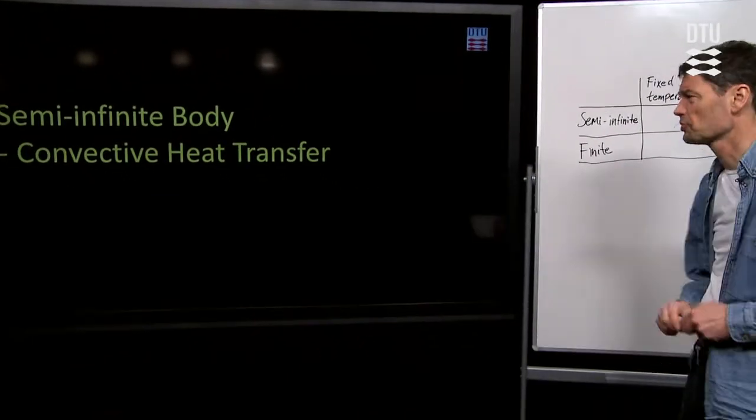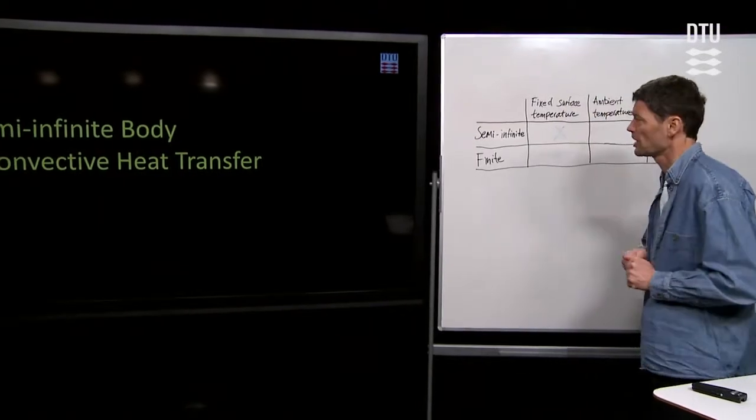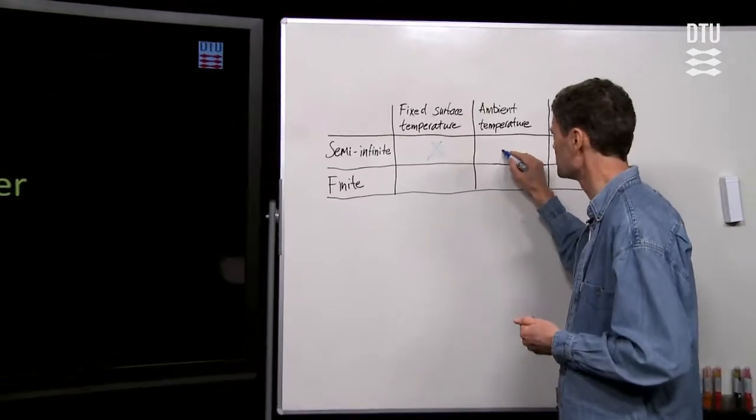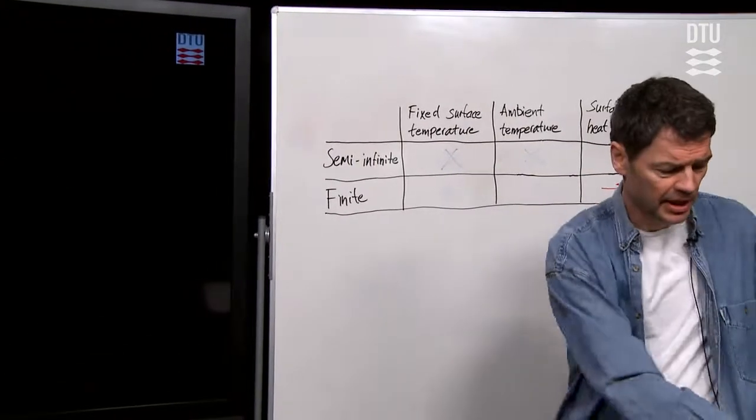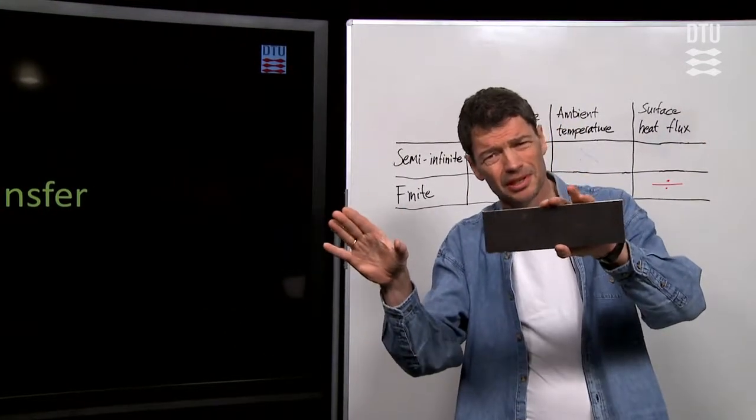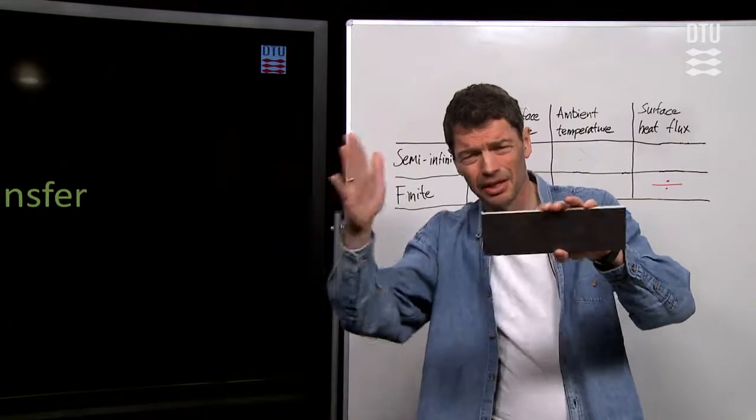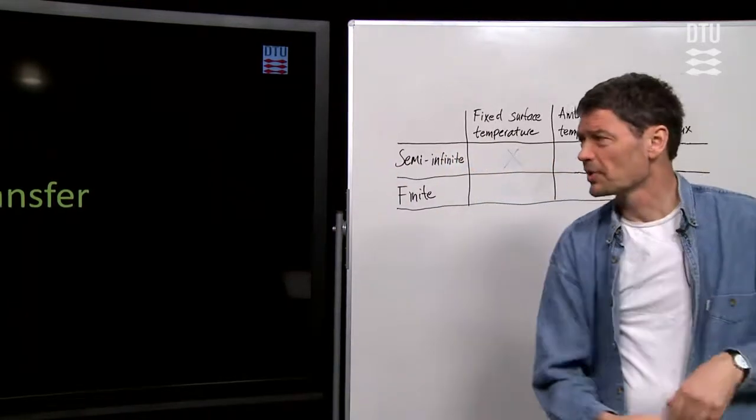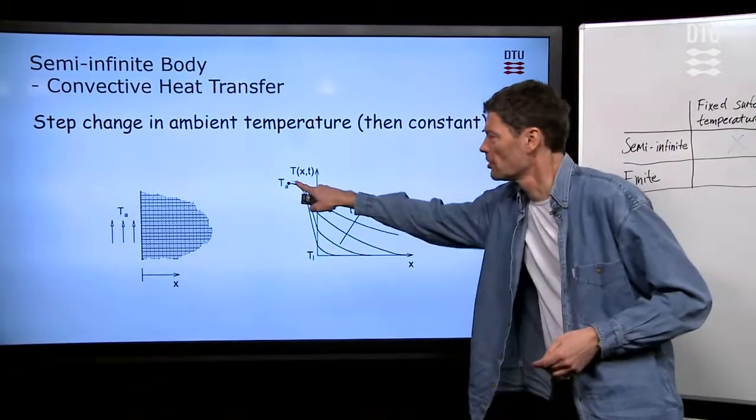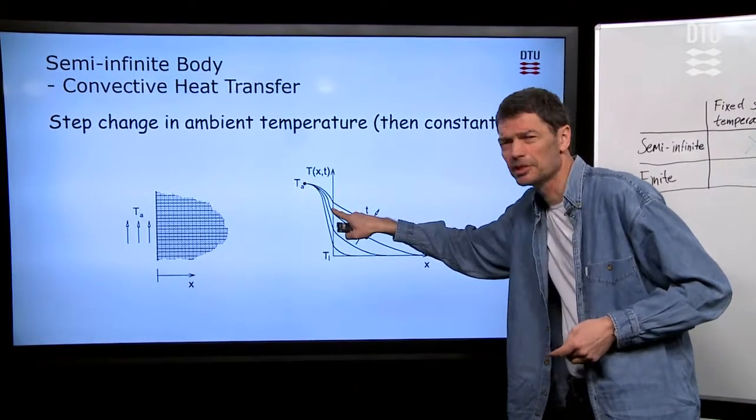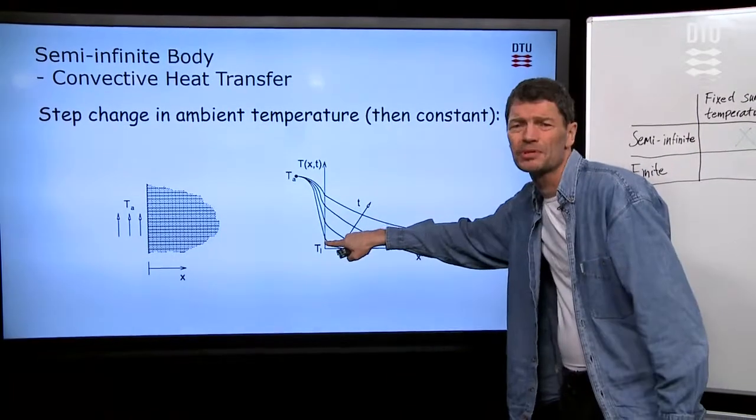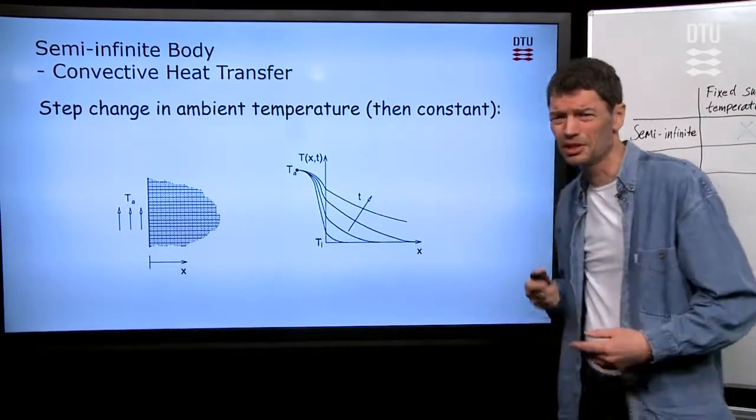Next case for which we have a solution, it's the case where we have a convective heat transfer coefficient at the surface of our material. So this I'll put a cross in the table here. That means that it's not the surface temperature, but the air temperature next to our material that suddenly changes to another fixed value. And in that case, here is a plot of it. So you can see that first of all, the heat has to be transmitted to the surface of the material before it comes into the material. So it's a little bit slower, the process compared to the case if it were the surface temperature that changed initially.